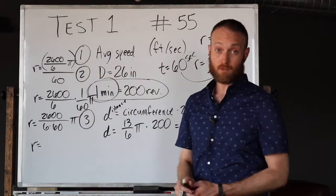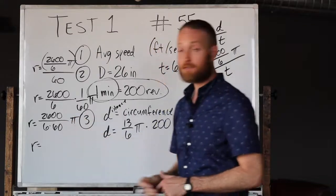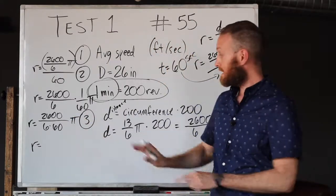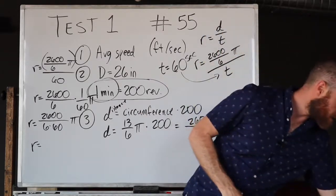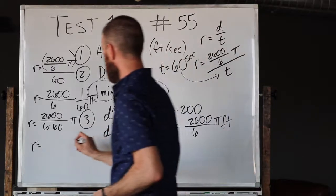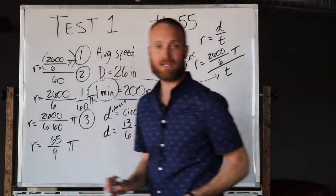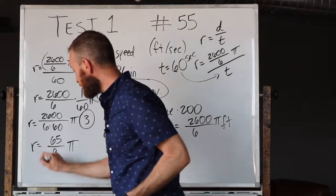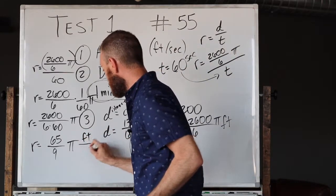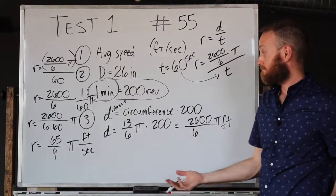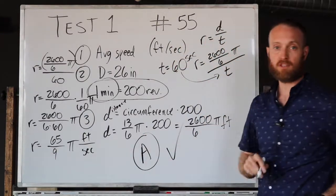This is where the rubber meets the road - this is where your calculator is going to have to do you a big favor. We got 2600 divided by 360 - ignore the π still, it's waiting to the end. 2600 over 360 comes out to be, using your calculator, 65/9 π. This is the rate: 65/9 π feet per second. That is your final answer for this problem.